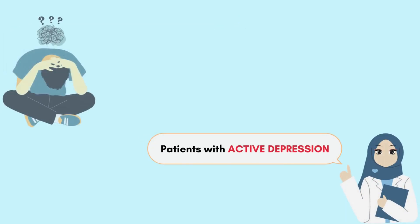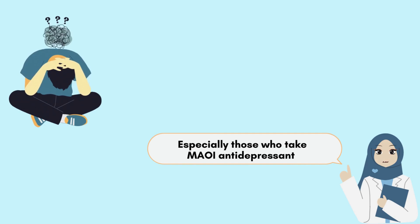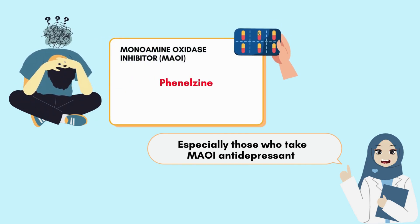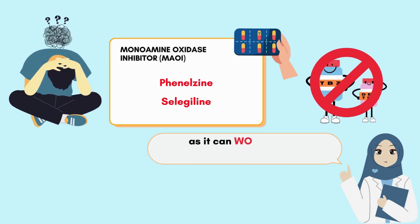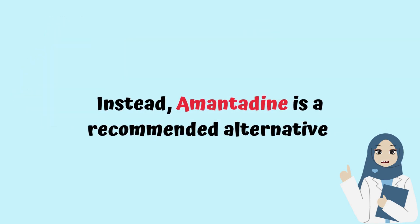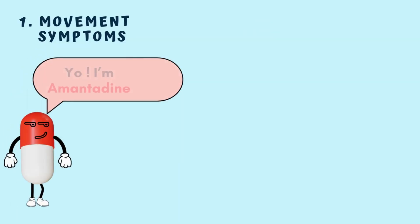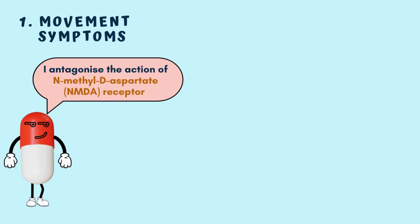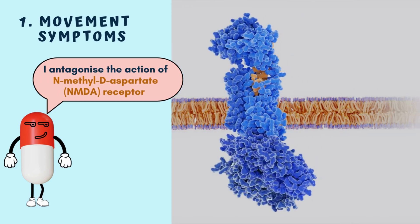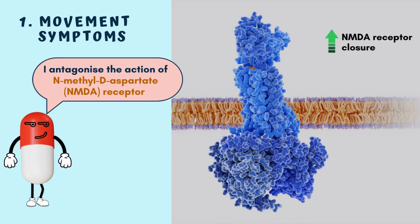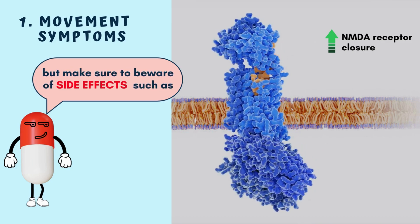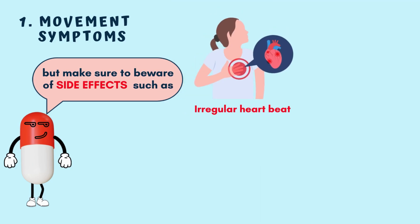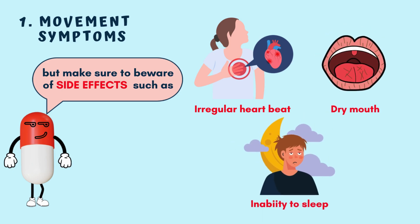Patients with active depression, especially those taking MAOI antidepressants such as phenelzine and selegiline, should not take Tetrabenazine or Deutetrabenazine as it can worsen depression symptoms. Instead, amantadine is a recommended alternative. Amantadine antagonizes N-methyl-D-aspartate (NMDA) receptors by increasing receptor closure, relieving chorea. Side effects of amantadine include irregular heartbeat, dry mouth and insomnia.